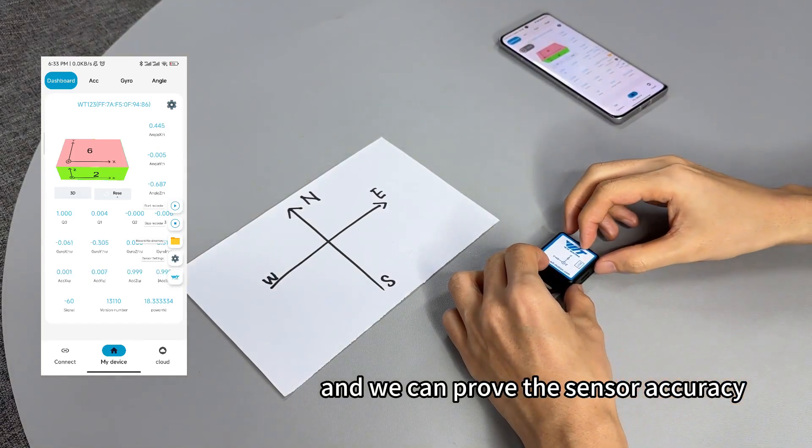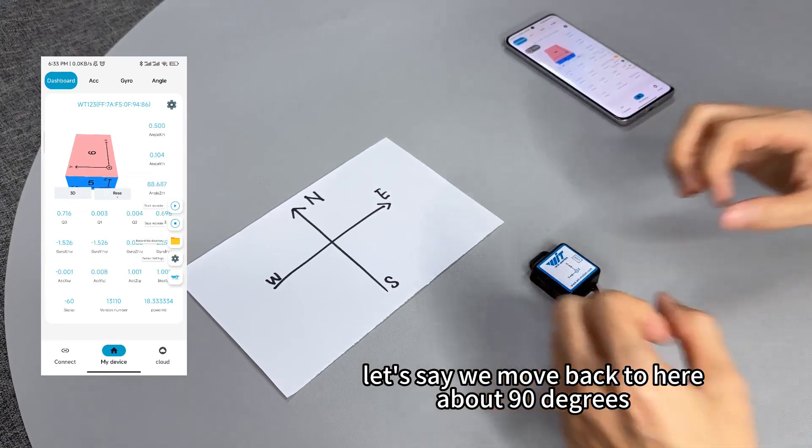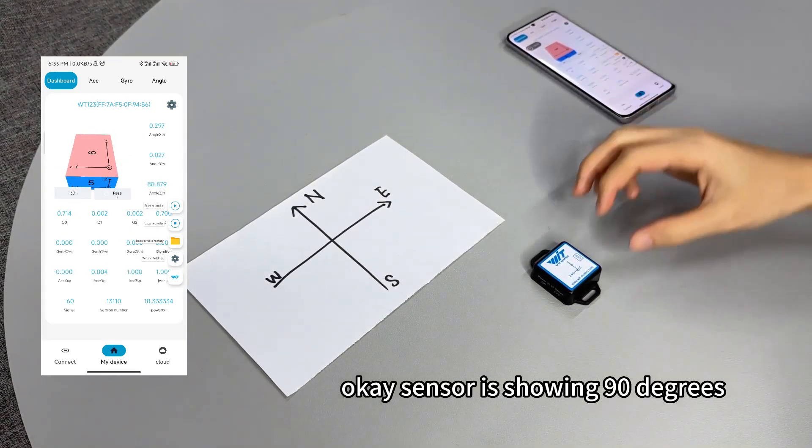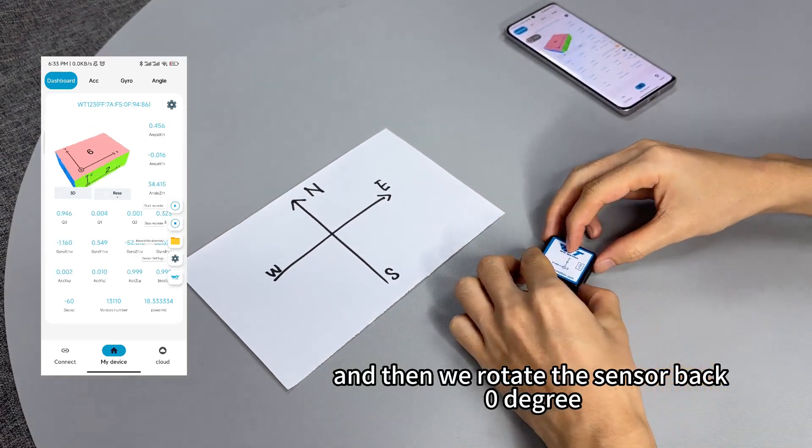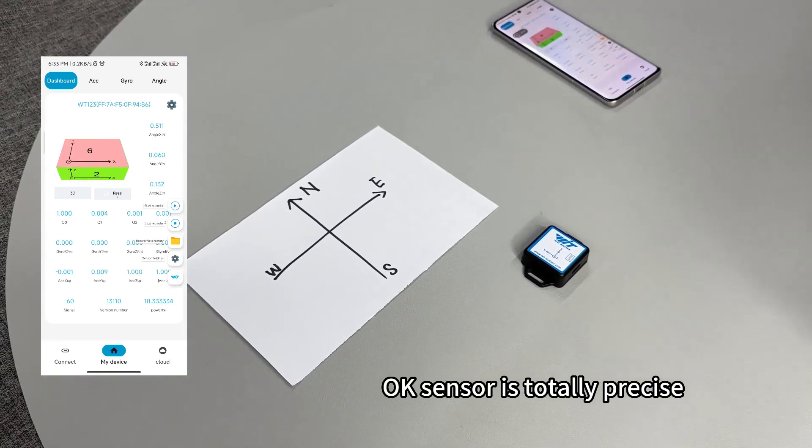And we can prove the sensor. Let's say we move that to here about 90 degrees. Okay, sensor is showing 90 degrees. And then we rotate the sensor back to zero degrees. Okay, the sensor is totally precise.